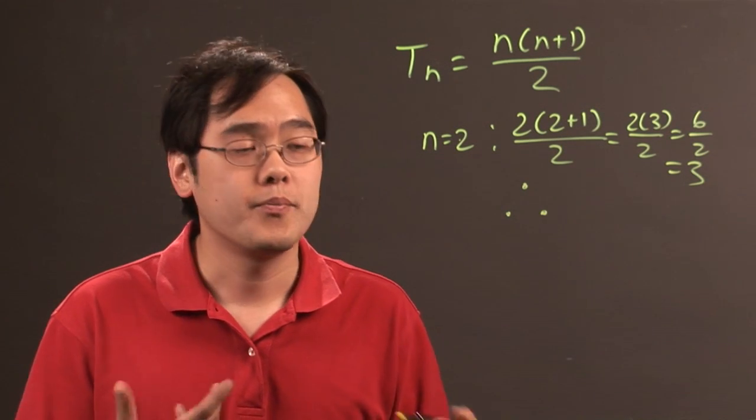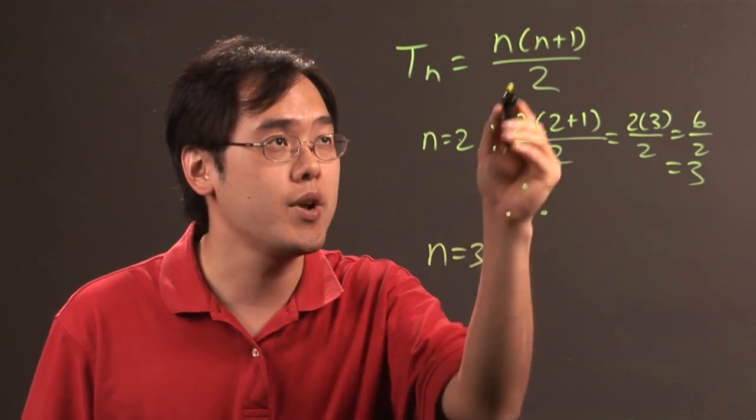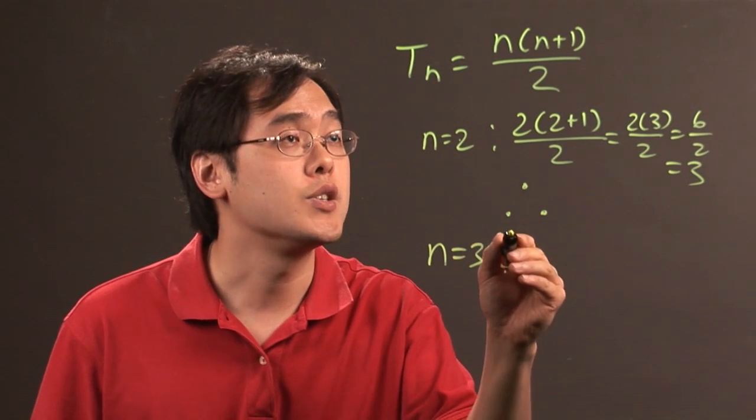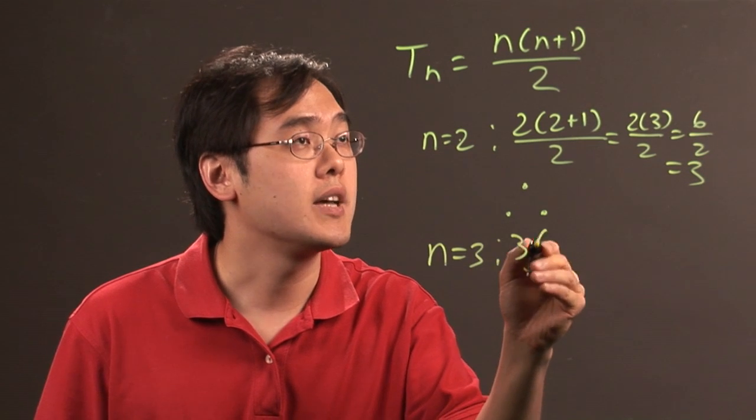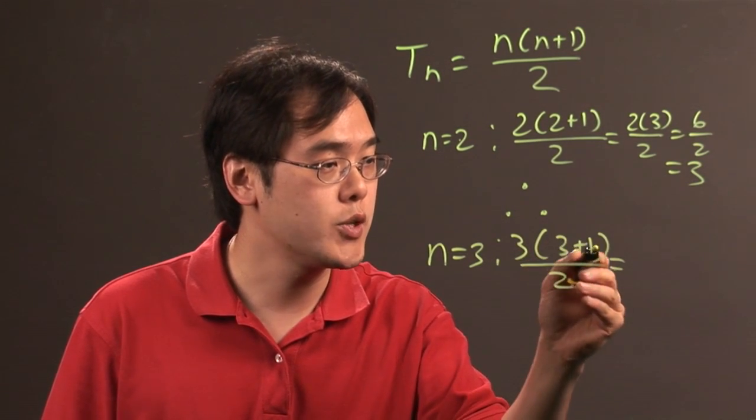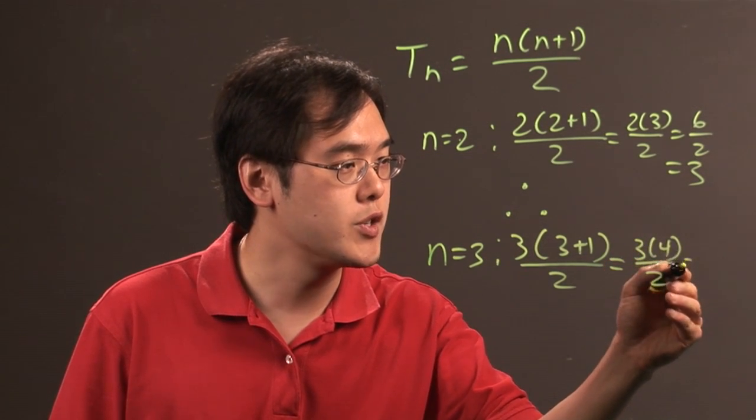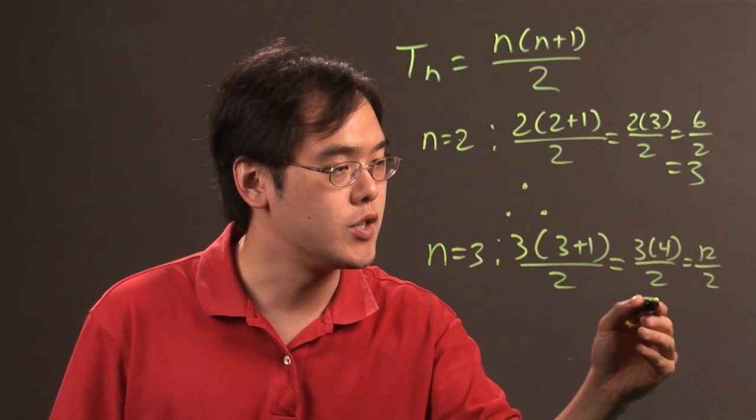Now if you want an equilateral triangle of length 3, you just plug in 3 in the formula and it'll tell you how many objects are required there. So you have 3 times 3 plus 1 over 2. So 3 plus 1 is 4 over 2. 3 times 4 is 12 over 2 which is going to give you 6.